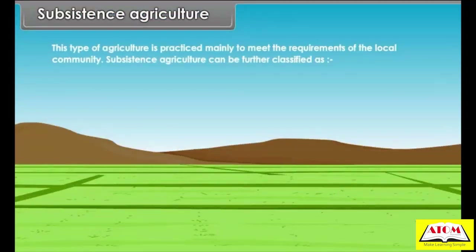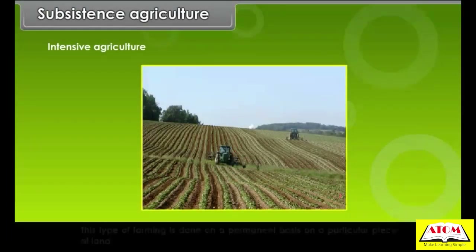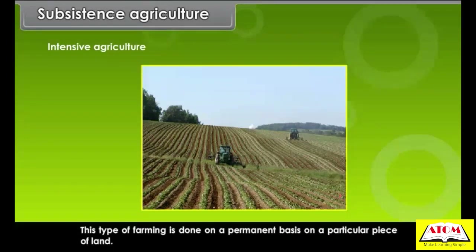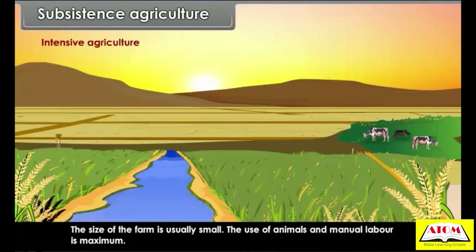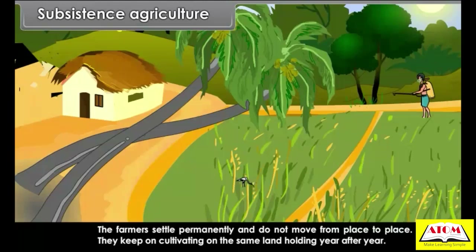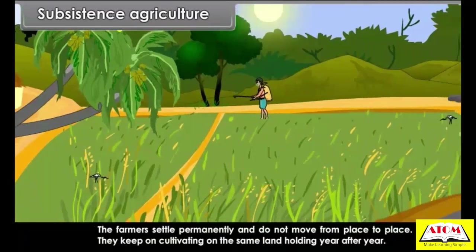Subsistence agriculture is practiced mainly to meet the requirements of the local community. It can be further classified as intensive subsistence agriculture and primitive subsistence agriculture. Intensive agriculture is done on a permanent basis on a particular piece of land. The size of the farm is usually small, the use of animals and manual labor is maximum, and the farmers settle permanently — they keep on cultivating the same land year after year.